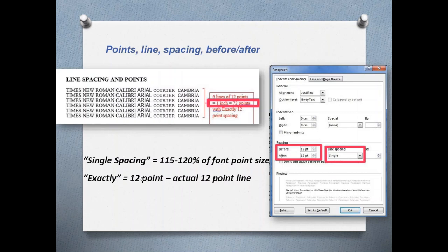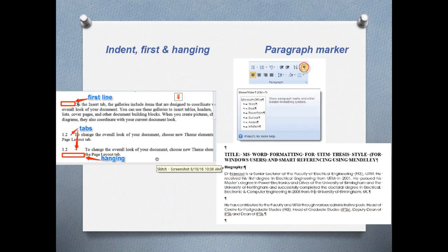For single spacing, it is actually 115 to 120 percent of the font point size. For 'exactly,' it will measure exactly 12 points per line — so if your font size is bigger than 12 points, the word will be truncated or chopped off. We also have 'before' and 'after' spacing, which defines what happens before and after a line.